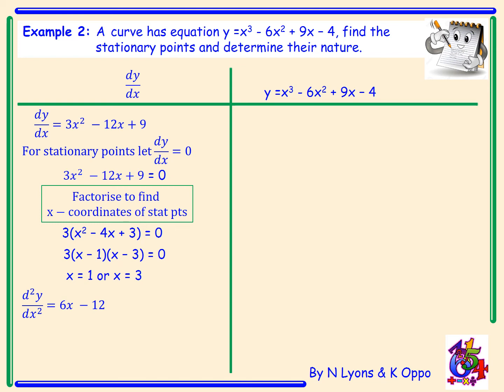Inserting x equals 1 into our second derivative gives a negative answer of negative 6, indicating that when x is 1 we have a maximum turning point. When we put x equals 3 into our second derivative we get a positive answer of positive 6, therefore we have a minimum turning point.